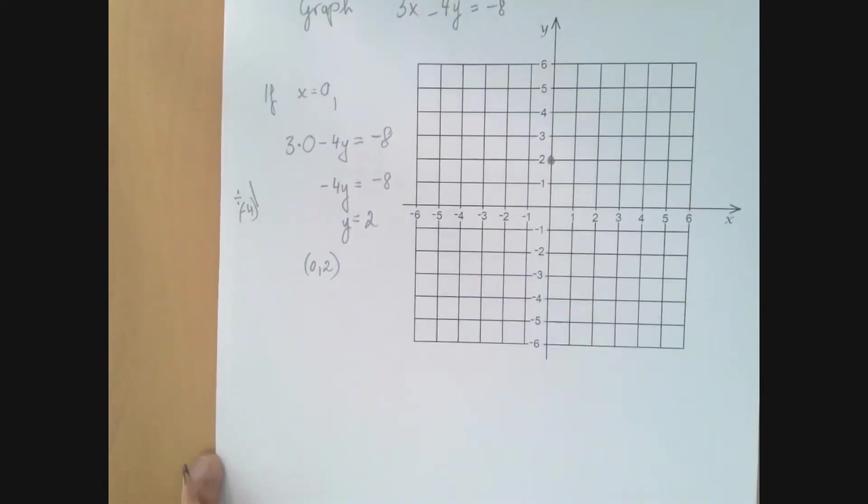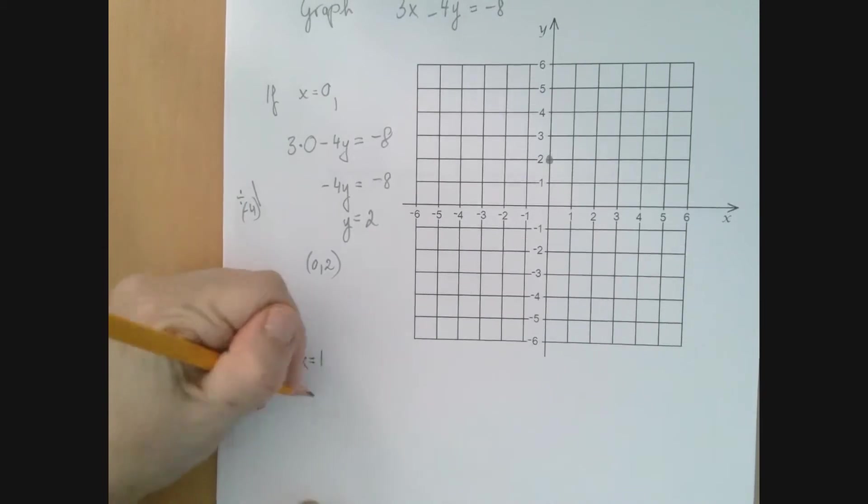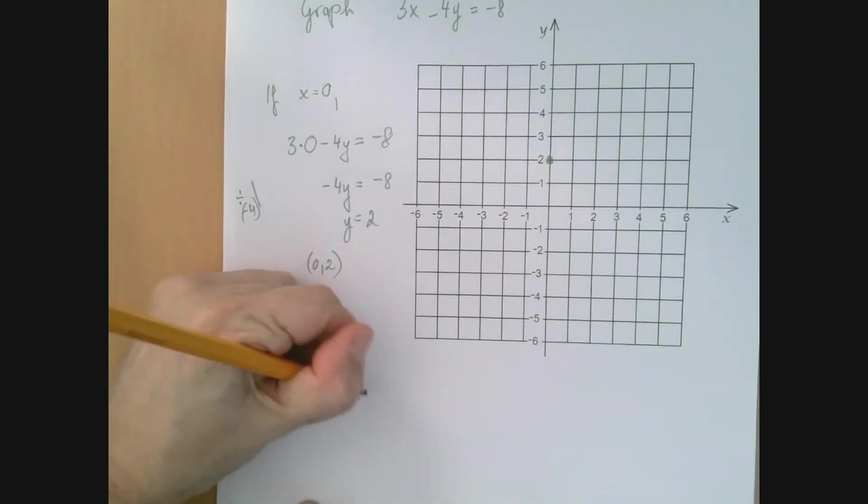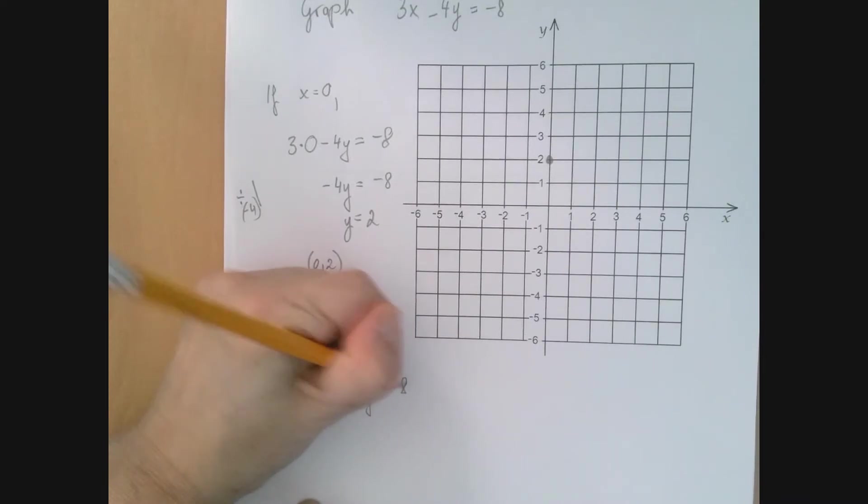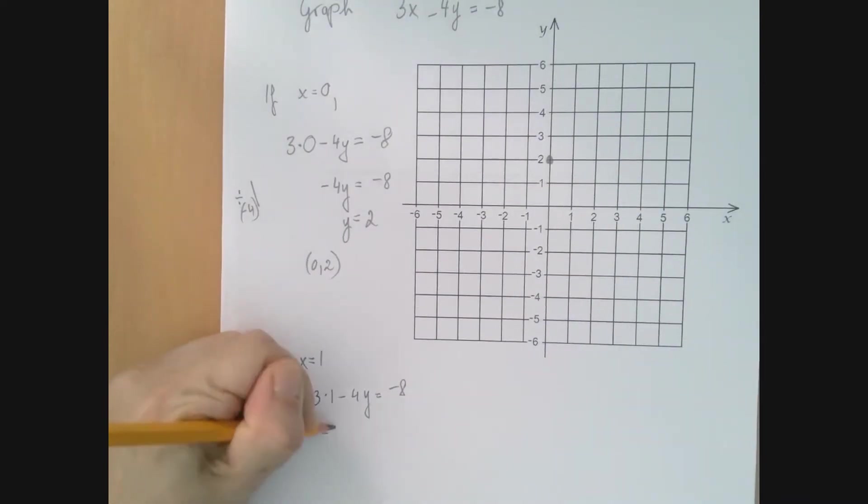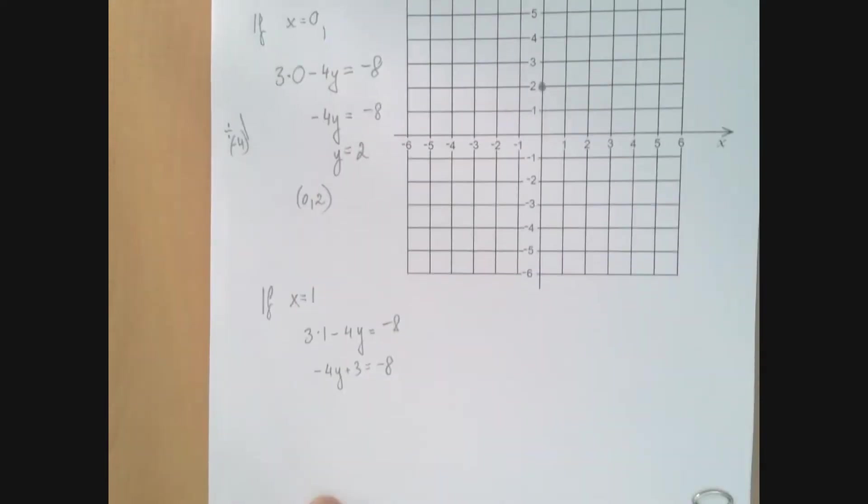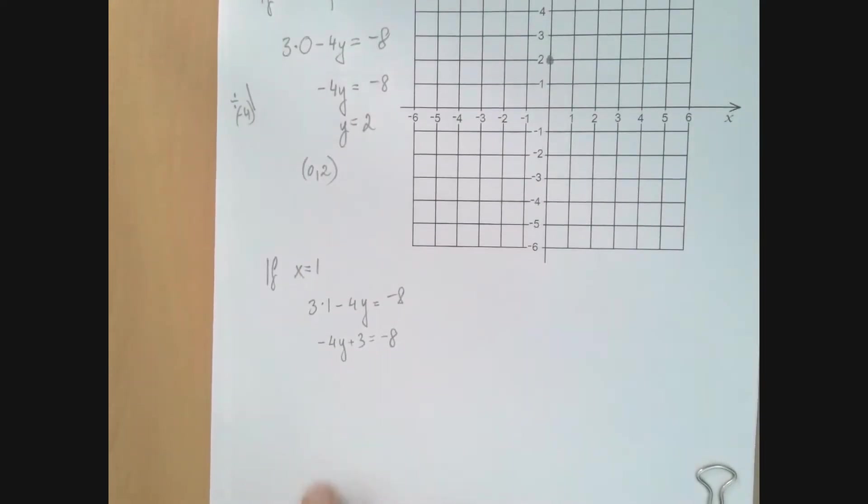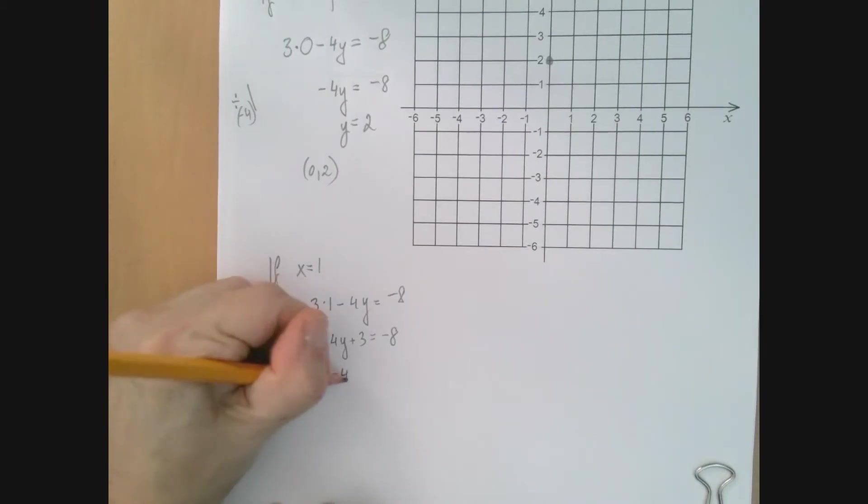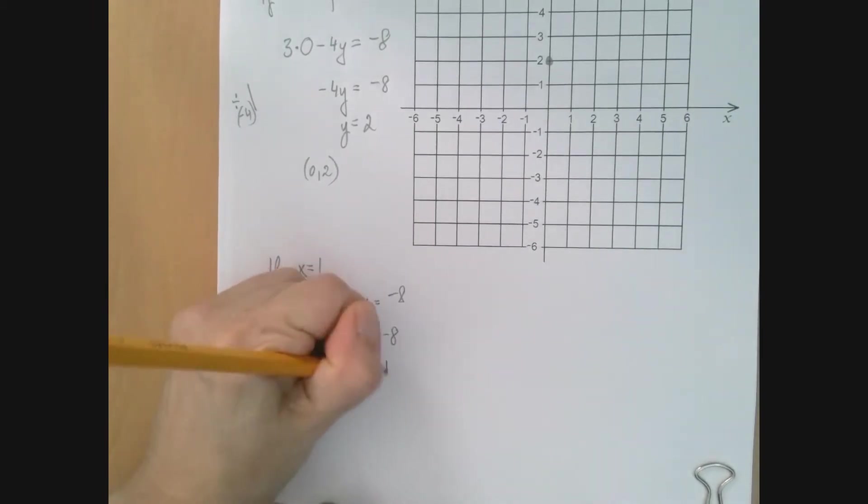If x is 1, then we have 3 times 1 minus 4y equals negative 8. So minus 4y plus 3 equals negative 8. We solve for y, so we're going to subtract 3.